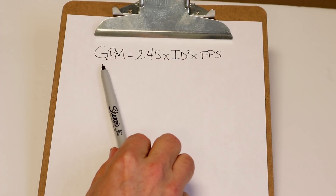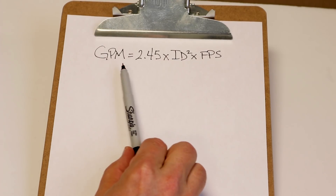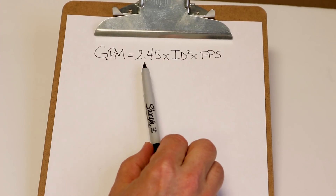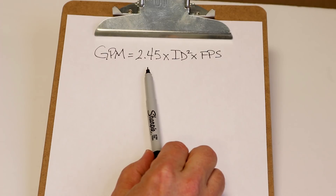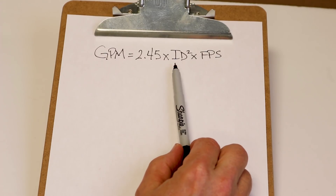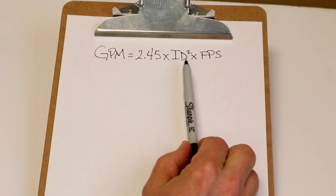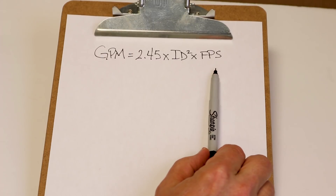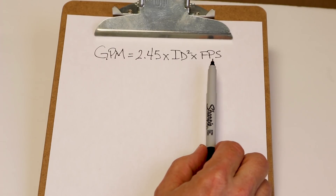Gallons per minute — GPM — equals the constant 2.45 times ID squared, which is the pipe internal diameter squared, times feet per second.